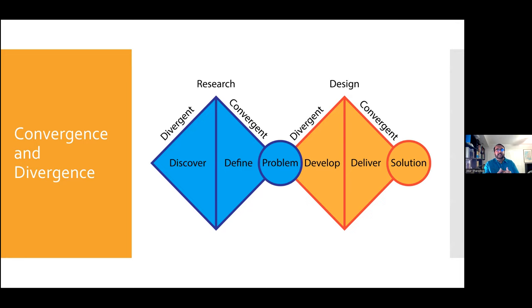Typically, divergent thinking is better done in a group — preferably a diverse one. And I'm defining diversity broadly, not just demographics but also functional diversity. Whereas convergent thinking is better done either alone or in smaller groups.